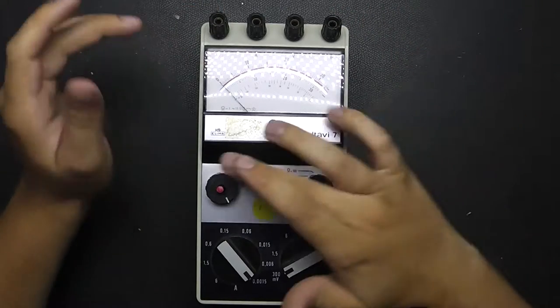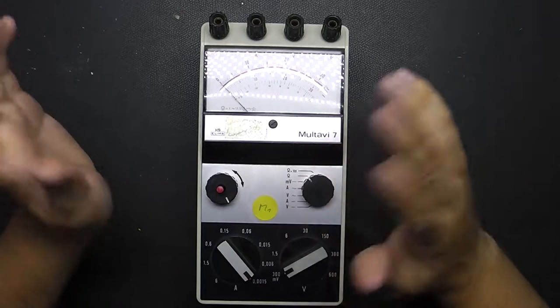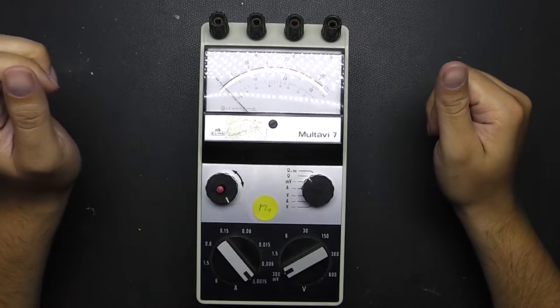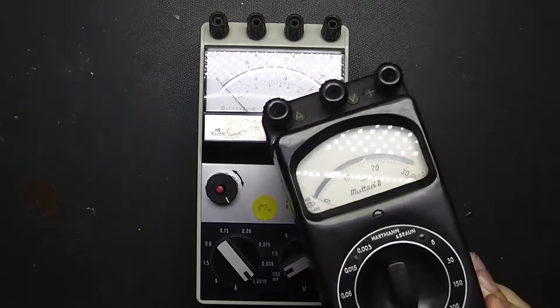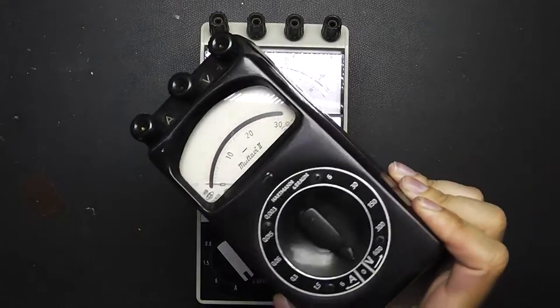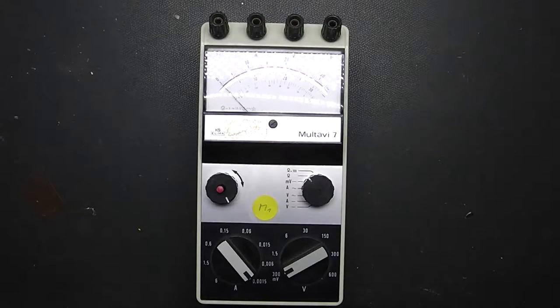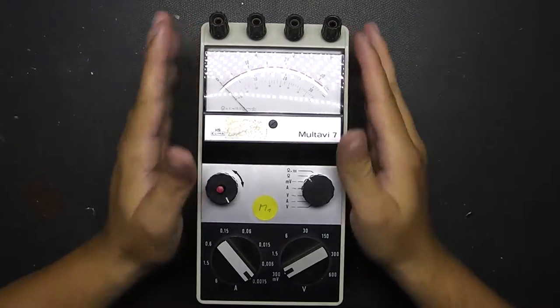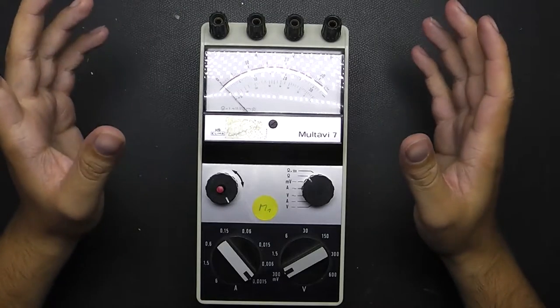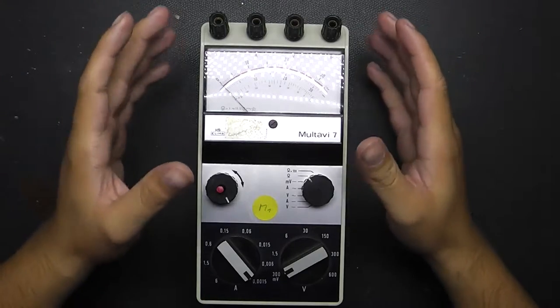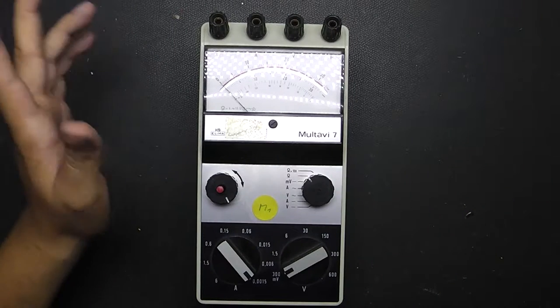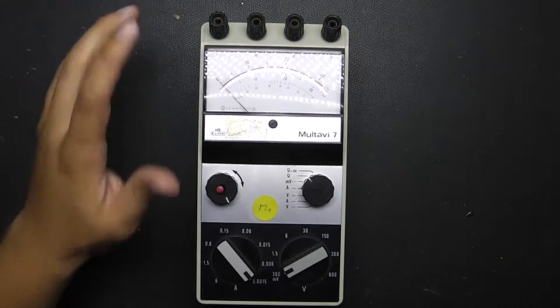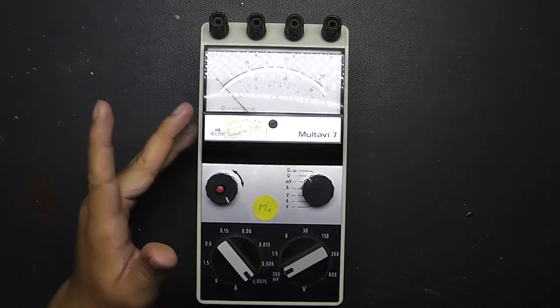This time we have again a Hartmann and Braun. This is a Multavi 7. In one of the last episodes we took a look at the Multavi 2 which is this one. But this is a far more recent model as the Multavi 2 which was from around the 1940s. This one is from the early 70s.